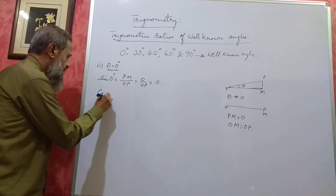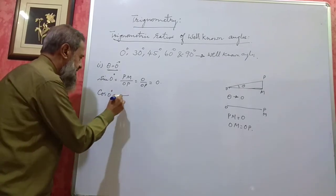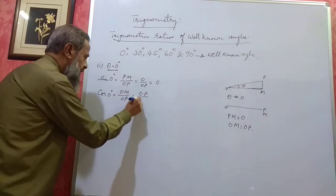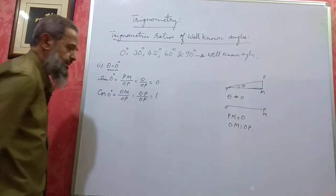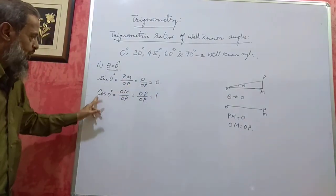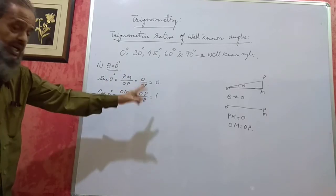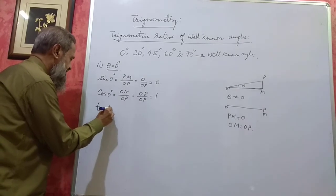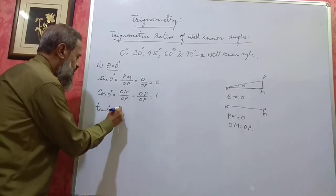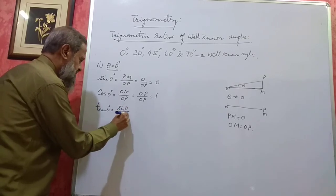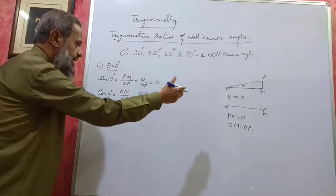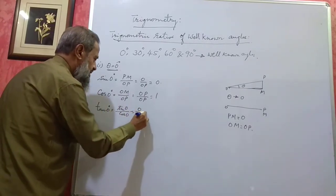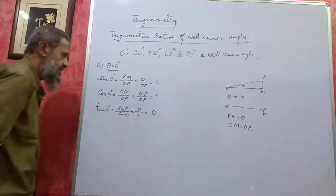cos 0° is adjacent by hypotenuse, that is OM by OP. Since OM is the same as OP in this case, it is OP by OP = 1. So cos 0° is 1. Then tan 0° equals sin 0° by cos 0°, or PM by OM — sin 0° is 0, cos 0° is 1, so 0 by 1 = 0. Tan 0° is 0.